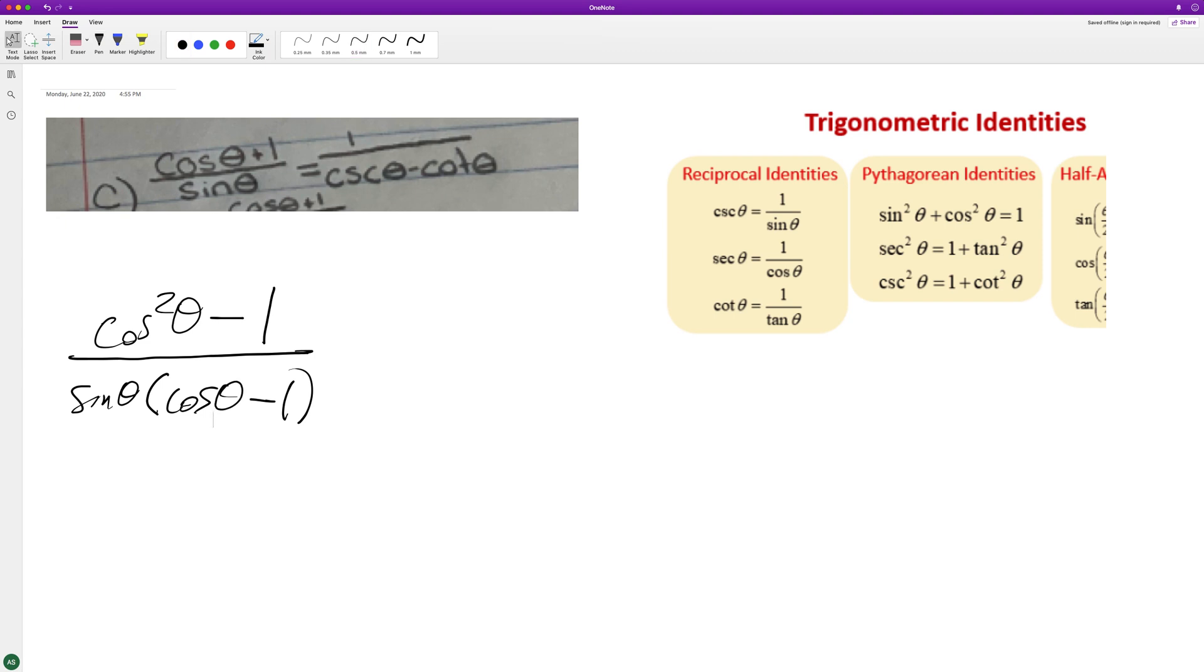So what we can do is factor out a negative 1 on top. We end up with 1 minus cosine squared theta, and that's a trig identity. If you look up here, we can convert this to sine squared because 1 minus cosine squared theta equals sine squared, and then we get